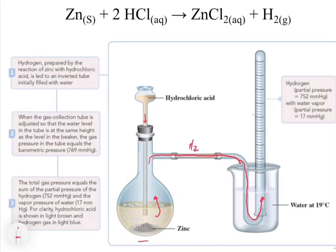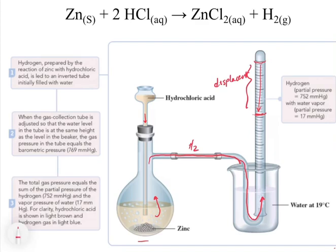There's water in the collection tube at 19 degrees Celsius. The reason we collect the gas over water is to collect only the gas and not any air or anything else. You start with the tube filled up with water, and as the gas comes in and fills the tube, it displaces the water and pushes it down. We get a new water level and can figure out the amount of gas produced by the displacement.